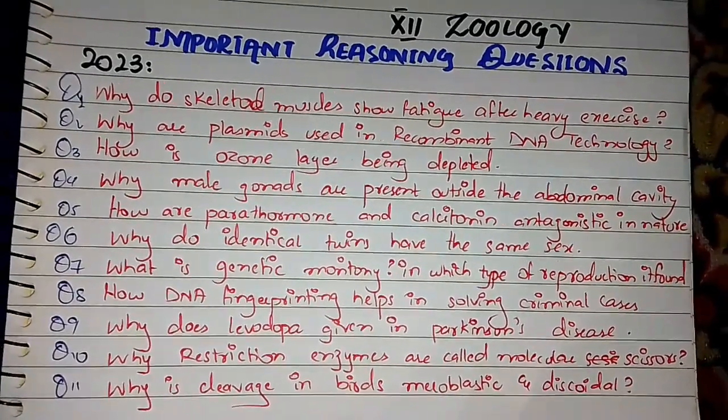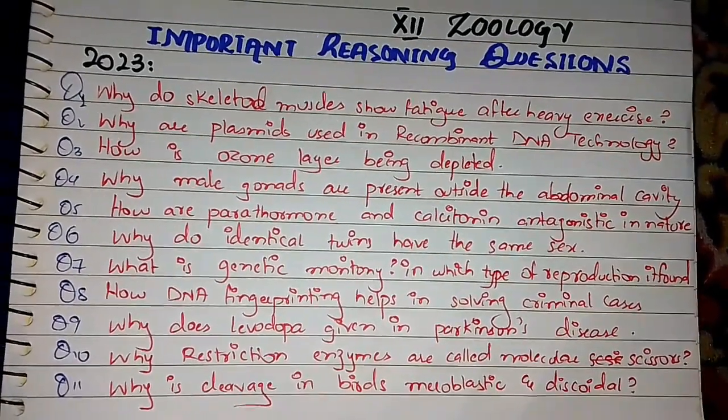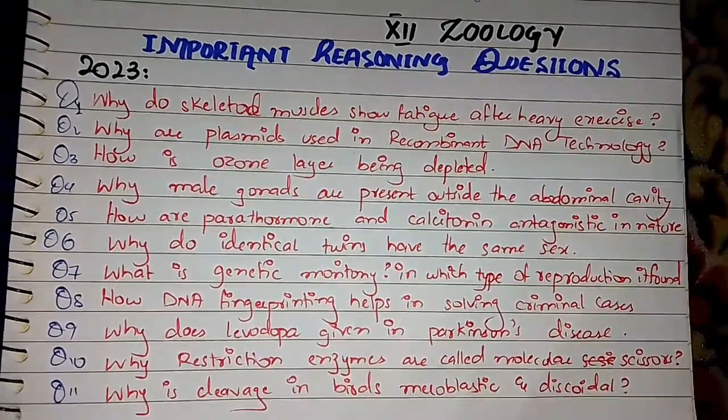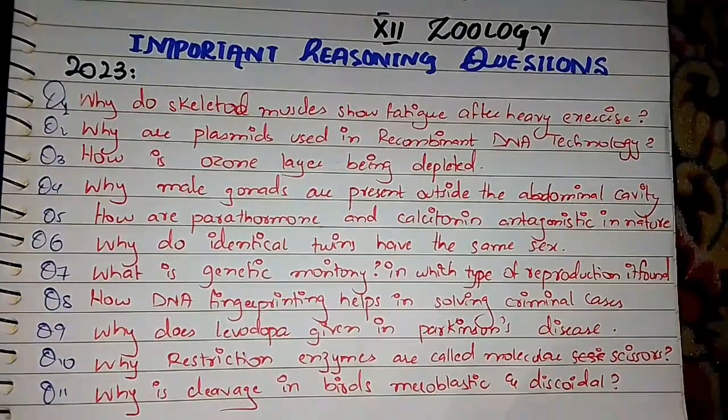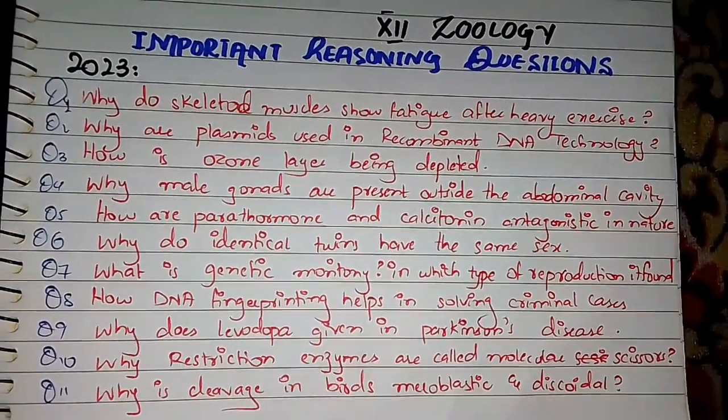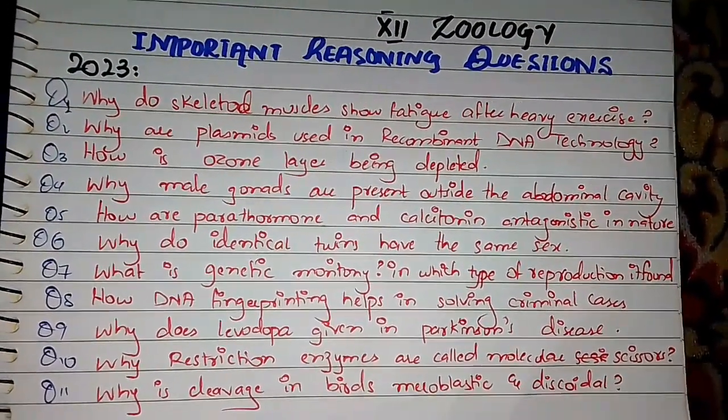Question number 9: We can convert a precursor to dopamine, which is why its deficiency causes Parkinson's disease.